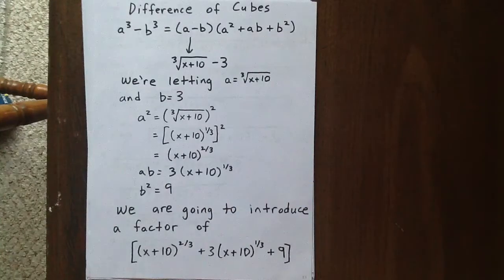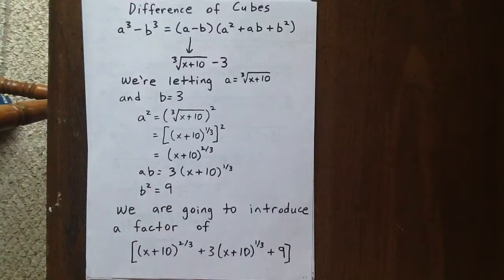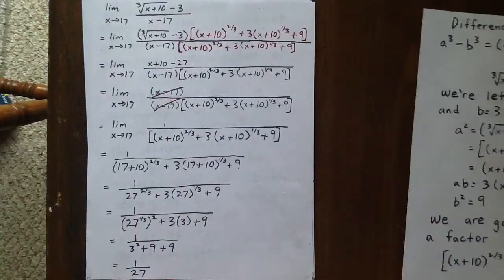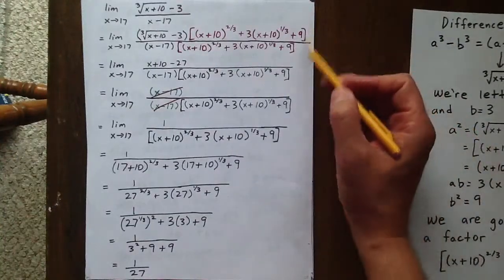So we're going to introduce a factor of x plus 10 to the two-thirds plus 3 times x plus 10 to the one-third plus 9 to both numerator and denominator. And we've shown that here.